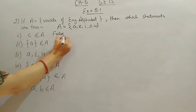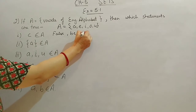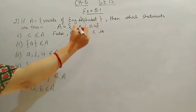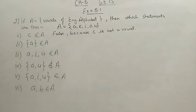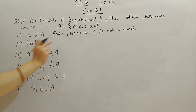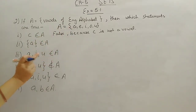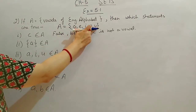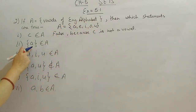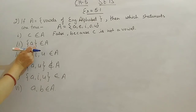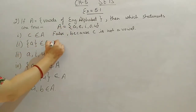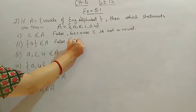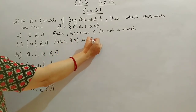Second: {A} belongs to A — you can see A is there, but not with flower brackets. The flower bracket represents the whole set, not just A. They have mentioned here {A}, meaning the set A. A is an element here, not a set. So this is also false — {A} is a set, not an element.